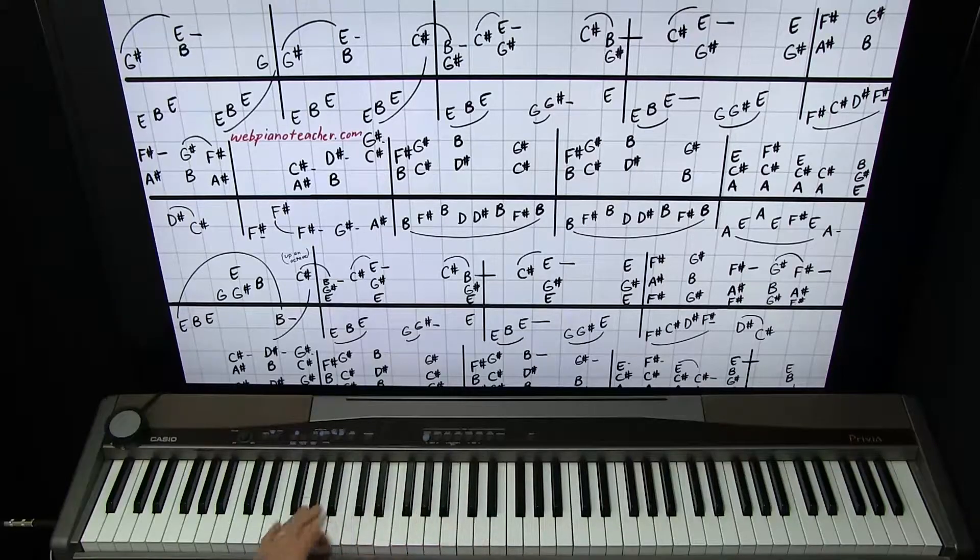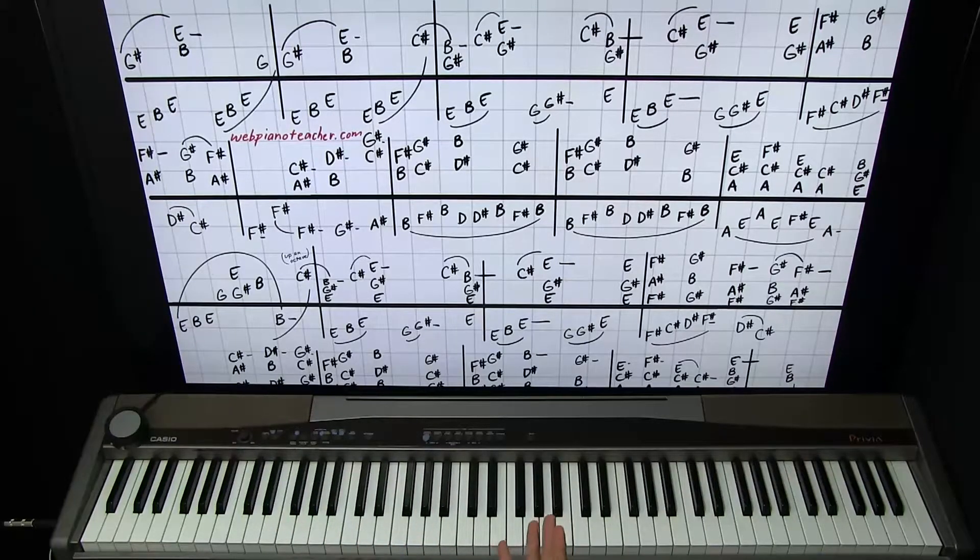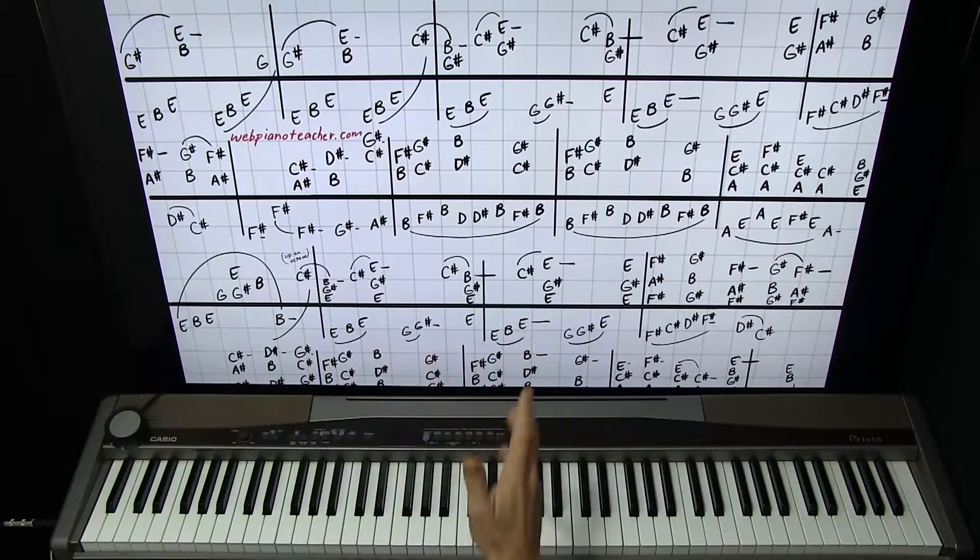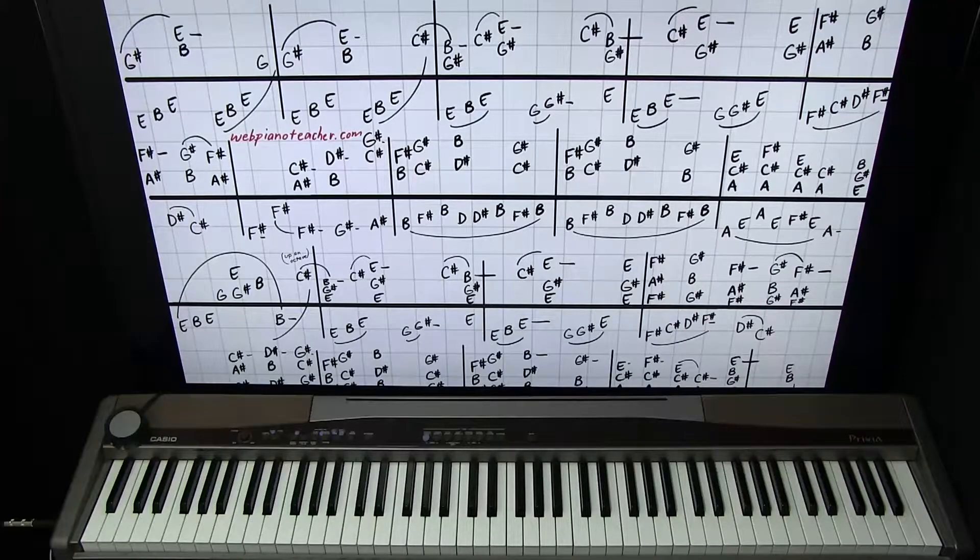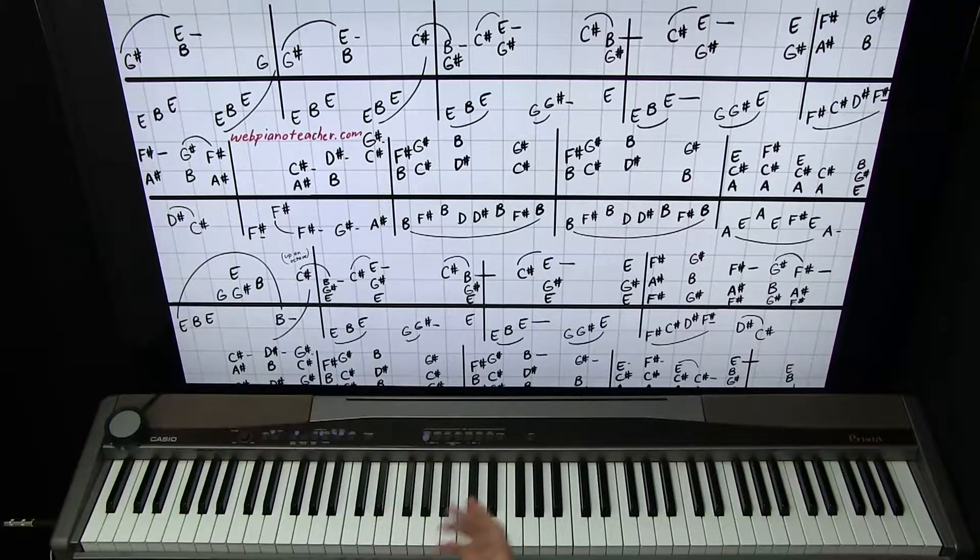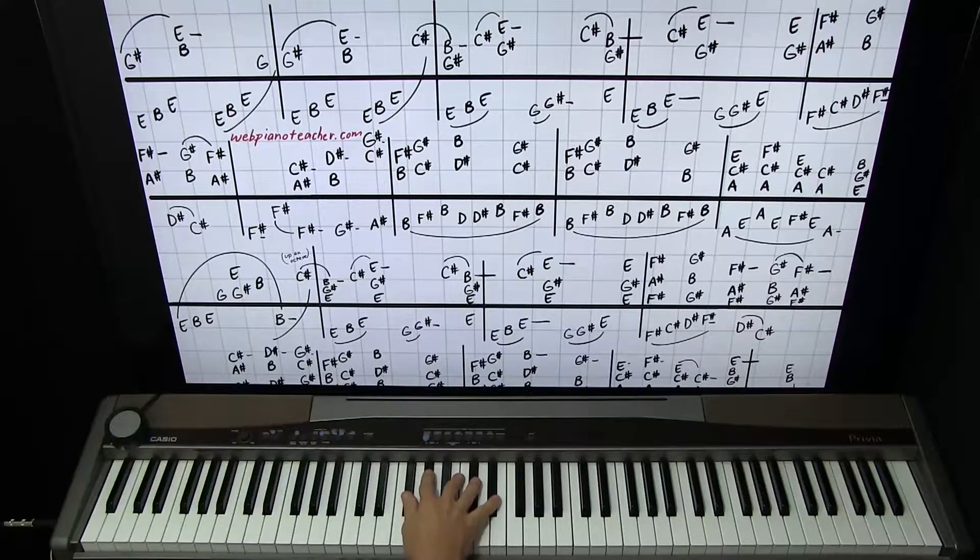Well, this is in the key of E, so we're going to have four sharps automatically. And then some occasional accidental sharps and naturals and so forth. So we have F, C, G, and D as our sharps we're going to look out for.